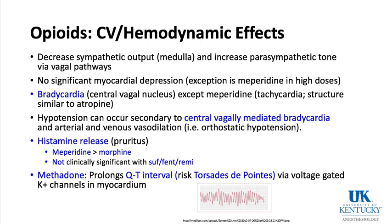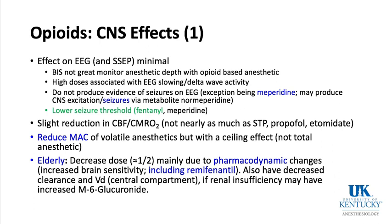CNS effects of opioids: BIS is not a great monitor of anesthetic depth with an opioid-based anesthetic. If you have mainly remifentanil infusing, it doesn't reduce BIS much. High doses of opioids are associated with EEG slowing and delta wave activity. They don't tend to produce evidence of seizures on EEG — one exception being meperidine, which in repetitive doses in someone with renal failure can build up the metabolite normeperidine, causing CNS excitation and seizures.